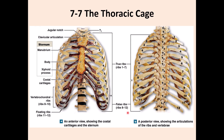This is a thoracic cage, made of the 12 thoracic ribs, or costal bones. These are 12 on each side, so there are 12 pairs. They are attached to this bone.